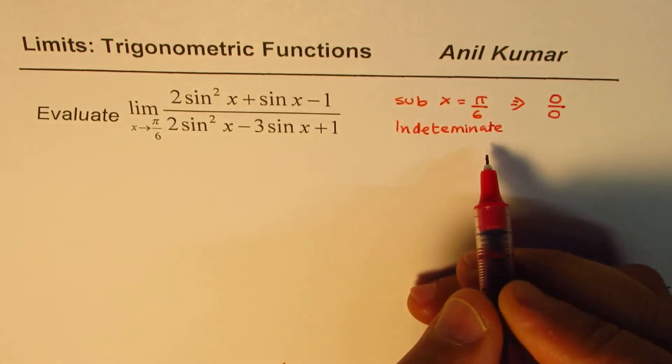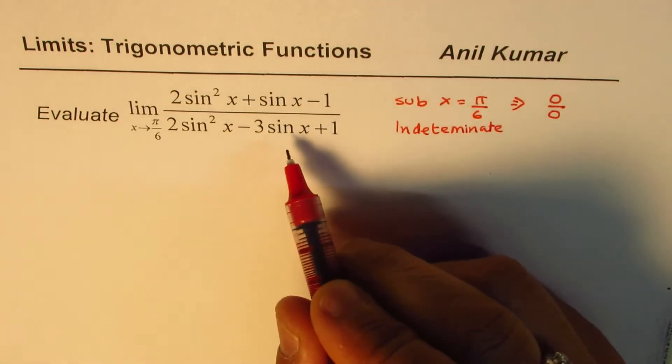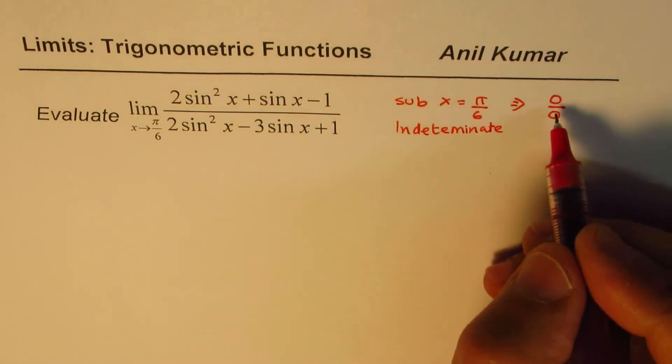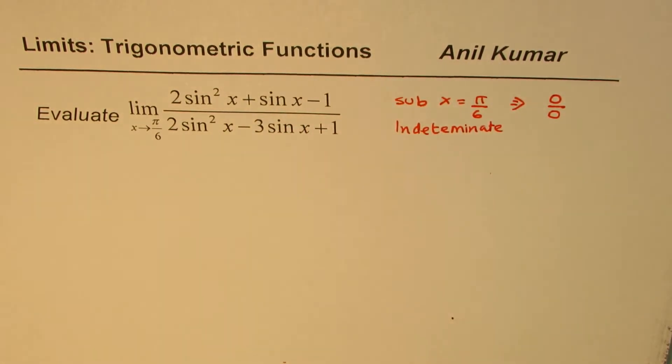That is to say we are unable to determine the value of this limit by direct substitution. So it could be 0, it could be infinity, it could be anything, because divide by 0 is not defined.